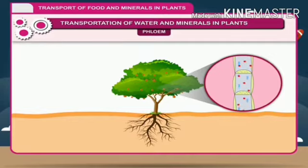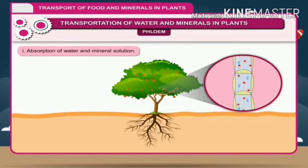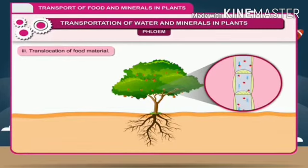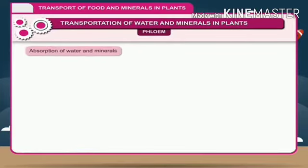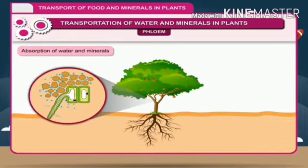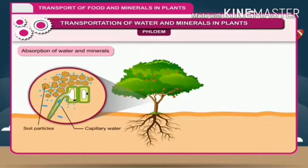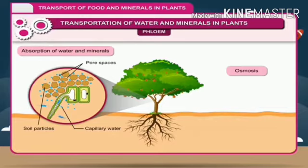During transportation, three processes are involved: 1. Absorption of water and mineral solution. 2. Rise of cell sap, or ascent of sap. 3. Translocation of food material. Plants absorb water and mineral salts from the soil with the help of their roots. The solution of water and mineral salts is termed capillary water, present between the soil particles in pore spaces. Along with water, mineral salts also enter the roots by the processes of osmosis, diffusion, and active transport.